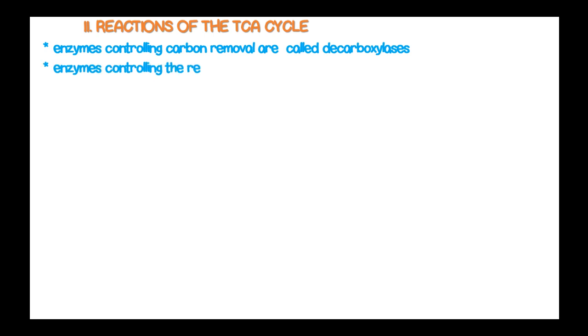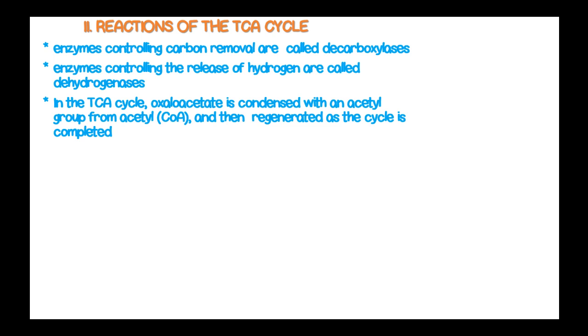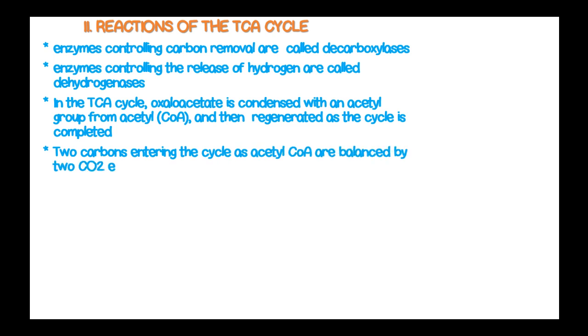We are going to look at the reactions within the TCA cycle. Enzymes controlling carbon removal are known as decarboxylases, and the enzymes that control release of hydrogen are called dehydrogenases. In the TCA cycle, oxaloacetate is condensed with an acetyl group from acetyl-coenzyme A, then regenerated as the cycle is completed. Two carbons entering the cycle as acetyl-coenzyme A are balanced by two carbon dioxide molecules exiting the cycle.